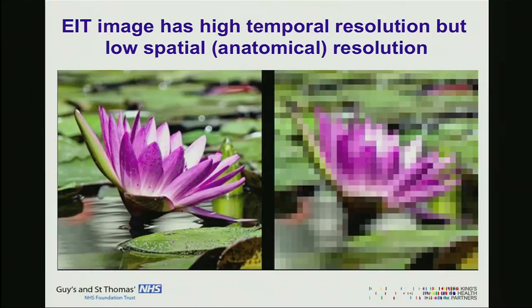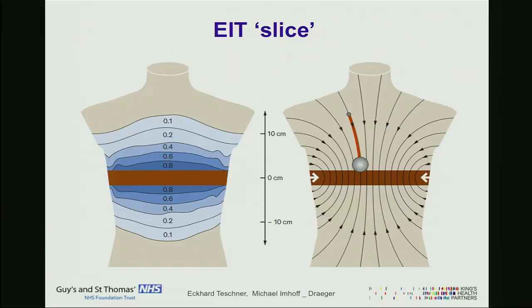The slice that EIT provides is not the slice we are used to with CT scan. X-rays travel in a linear fashion, whereas electricity doesn't — it is non-linear. Therefore, we have a large band or thick slice with EIT, which depends on the size of the patient, but it is between 7 and 10 centimeters across the band. That is what the image is — a thick slice that EIT can image.